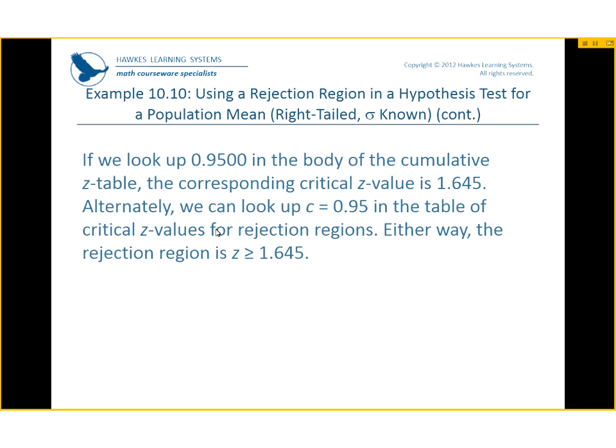This is the table in the very front of the book — the table used in Chapter 6 for the normal distribution. Because we're assuming that this data is normally distributed, we can use that table. Alternatively, we can look up the level of confidence equal to 0.95 in the table of critical values for the rejection regions. Either way, the rejection region is Z is greater than or equal to 1.645.